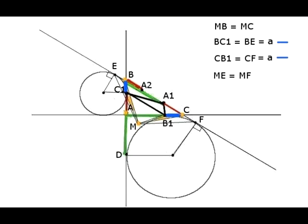Let E and F be the tangency points of our two excircles to line BC. Then point B is equidistant from E and C1, which are two tangency points to the same circle. And point C is equidistant from B1 and F, which are two tangency points to the same circle. Since segment CB1 and segment BC1, marked blue, have equal length, two line segments BE and CF have equal length. From this we conclude that M is equidistant from E and F.